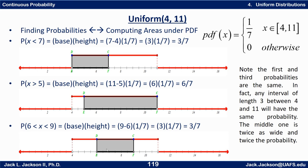The last one is from 6 to 9, the probability in the middle here. Well, the base goes from 6 to 9, that's a distance of 3. 9 minus 6 is 3. The height is one-seventh. Base times height, 3 times one-seventh is 3/7, which is that probability.